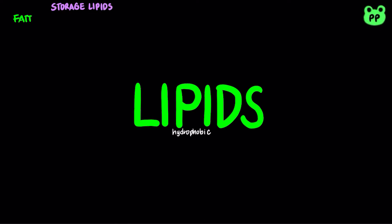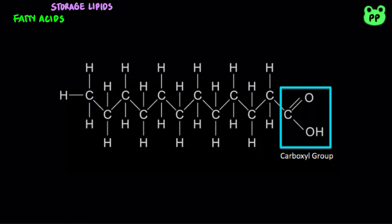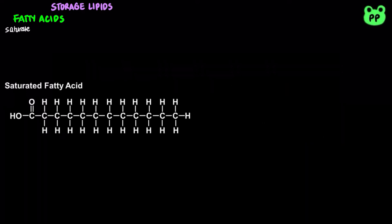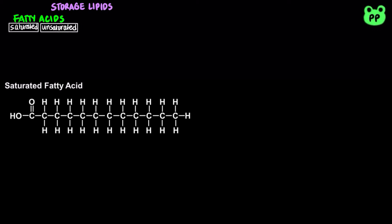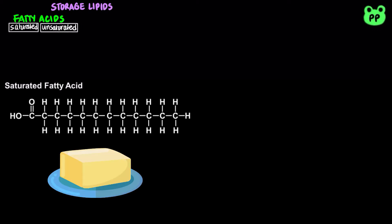The building blocks of many lipids are fatty acids, which are carboxylic acids with hydrocarbon chains that function in energy storage in most lifeforms. There are two main types of fatty acids. Saturated fatty acids have the maximum number of hydrogen atoms possible and no double bonds. They are solid at room temperature since they stack well and have higher melting points. Most animal fats are saturated.